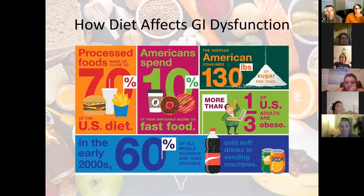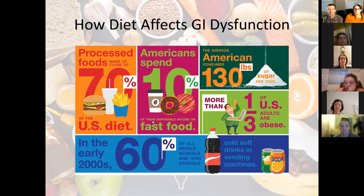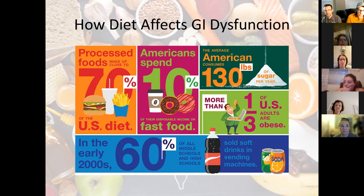Some interesting facts about diet: processed foods make up close to 70% of the U.S. diet, which is kind of disturbing — so shop the perimeter of the store, don't go into the aisles as much. Americans spend about 10% of their disposable income on fast food. The average American consumes 130 pounds of sugar per year — that leads to a lot of inflammation in the gut. Too much sugar leads to inflammation as well as obesity, and more than a third of U.S. adults are obese. In the early 2000s, 60% of middle schools and high schools had soft drinks for sale in their vending machines — so a lot of sugar, a lot of inflammation.